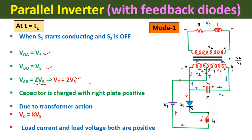According to the derivation from the last class, the output voltage equals k × Vs, where k is the turns ratio N2/N1. This is the output voltage equation for the parallel inverter with feedback diodes. As S1 conducts, source current enters at the O point, making O positive with respect to A. Due to transformer action, B is positive with respect to O, so B is overall positive with respect to A. Therefore, output voltage polarity is positive on one terminal, and load current and load voltage are taken as positive in Mode 1.